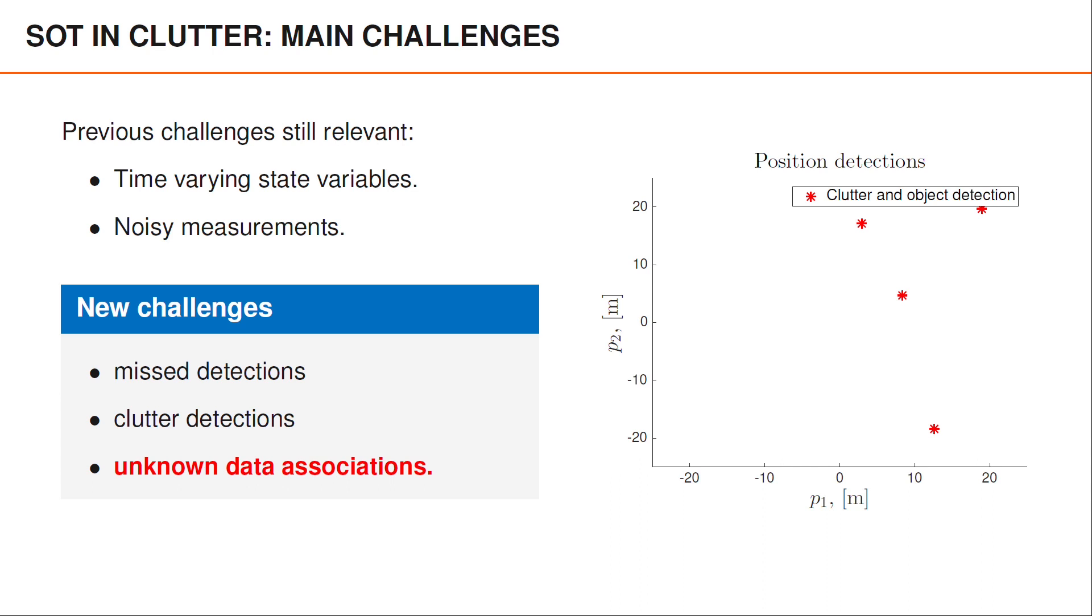This brings us to the third challenge, which is that we have unknown data associations. That is, at all times we receive a set of measurements, but no one is going to tell us which of these detections, if any, is an object detection. Let us look at the sequence of measurements under these assumptions.